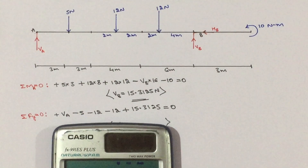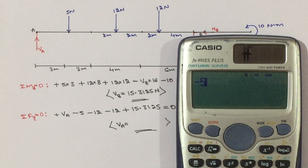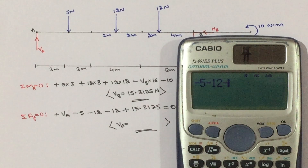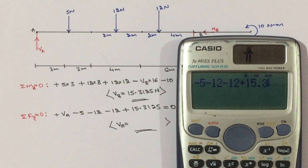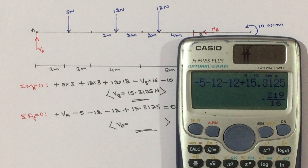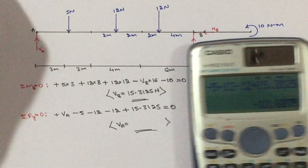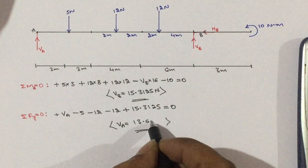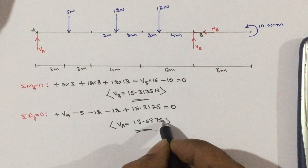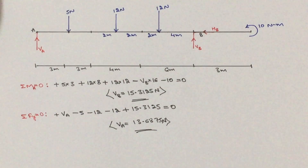Calculating: VA − 5 − 12 − 12 + 15.3125 = 0, giving −13.6875, so VA = +13.6875 Newtons.